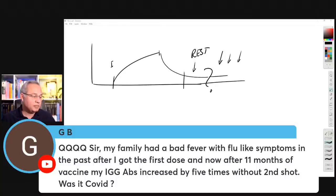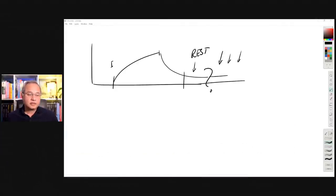GB says, sir, my family had a bad fever with flu-like symptoms in the past after I got the first dose and now after 11 months of vaccine. My IgG antibodies increased by five times without second shot. Was it COVID? It is possible that that was an exposure if they just increased. If they were not that way before, but then all of a sudden they increased, that means you may have an asymptomatic exposure. I like Skyfrog's question. Are vampires dead or are they? And then connection to the virus. Is the virus dead or are they? So a few days ago, we talked about the virus and are they alive or not. And so some folks wrote very philosophical comments under the video to say, here is the philosophy of the dead things or alive things. And they explained to me that how me even thinking like this is wrong.